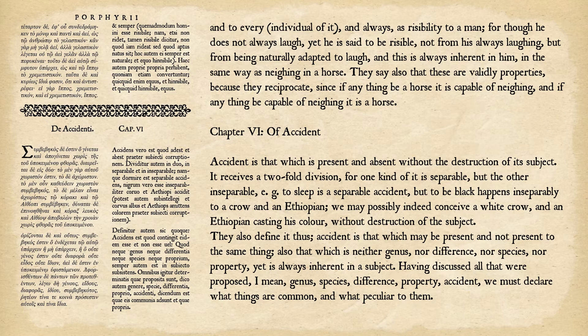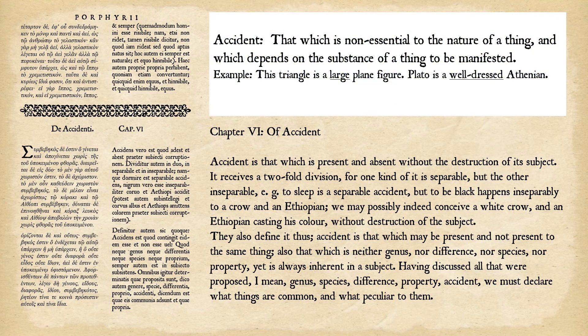Chapter 6, Of Accident. Accident is that which is present and absent without the destruction of its subject. It receives a two-fold division: one kind is separable, but the other inseparable. To sleep is a separable accident, but to be black happens inseparably to a crow and an Ethiopian. We may possibly conceive a white crow and an Ethiopian casting its color without destruction of the subject. This distinction of separable and inseparable is important.